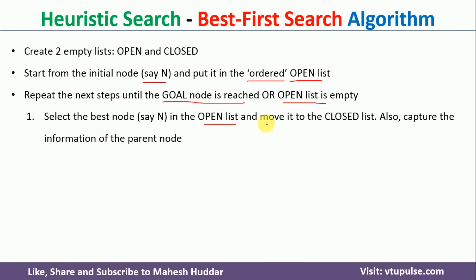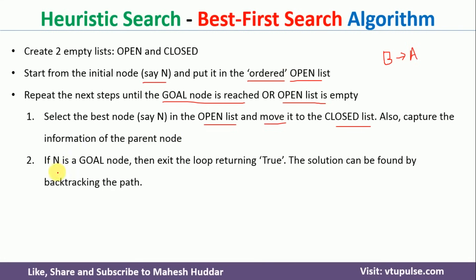Once you select that particular node, we need to move it to the closed list. We also need to capture the information of the parent node — for example, if we have selected B as the node, its parent is A. We need to remember the parent of this node because that is required whenever we want to find the final path. In the next step we check whether this best node is the goal node or not. If it is the goal node, we exit the loop and the value is written as true, meaning we have reached the goal node.